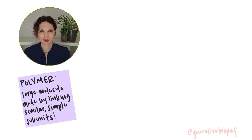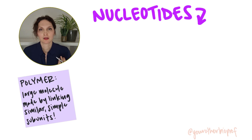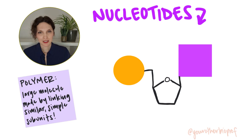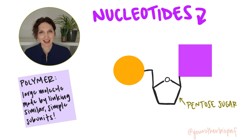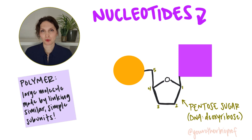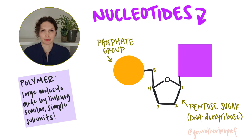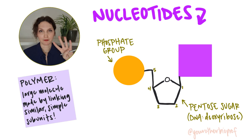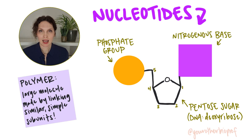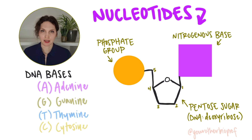DNA is a polymer of DNA nucleotides, so let's start with a quick review of what's in a nucleotide. Nucleotides consist of three parts: first is a five-carbon or pentose sugar, and for DNA that is deoxyribose. You're also going to have a phosphate group, often represented by a circle, and finally one of four different nitrogenous bases: adenine, guanine, thymine, cytosine.